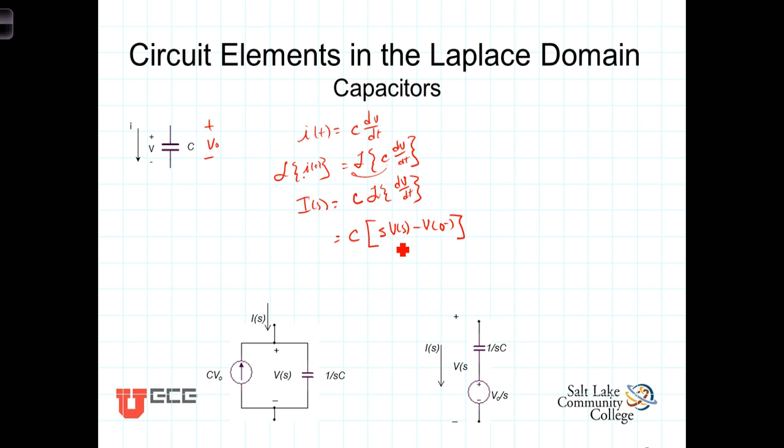Well, go ahead and distribute the C on through and we get then that I(s), the current in the Laplace current associated with this capacitor is equal to Cs*V(s) minus C*V0.